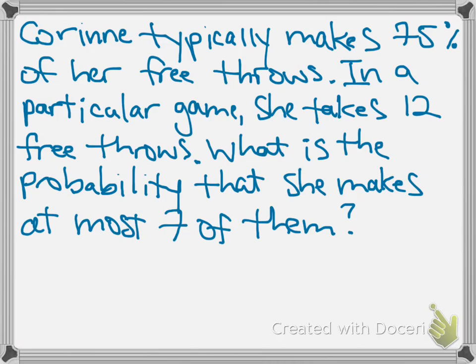First, let's talk about whether or not this truly is a binomial setting. Our first requirement was that there had to be only two outcomes — success and failure. That requirement is satisfied: either she makes the shot or she doesn't. The second requirement was a finite number of observations, and that is satisfied because there are 12 shots taken in the game.